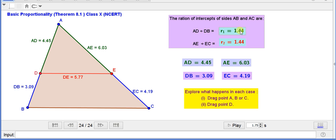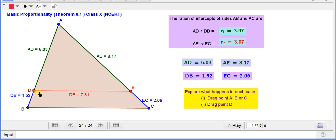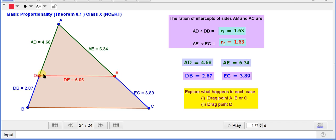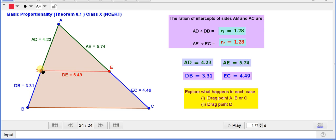Now, let us examine, if you will drag this point D, then what happens? We see here, the value of AD and DB are changing, whereas the ratio remains, the ratios are also changing.